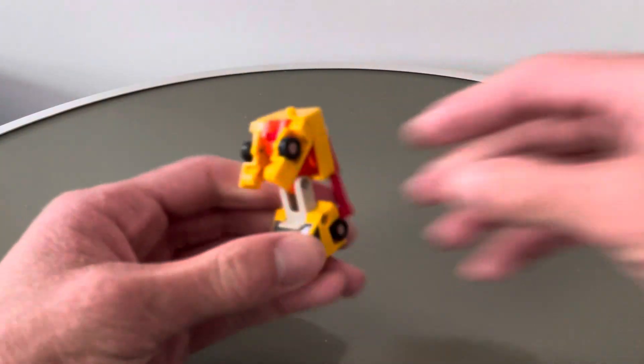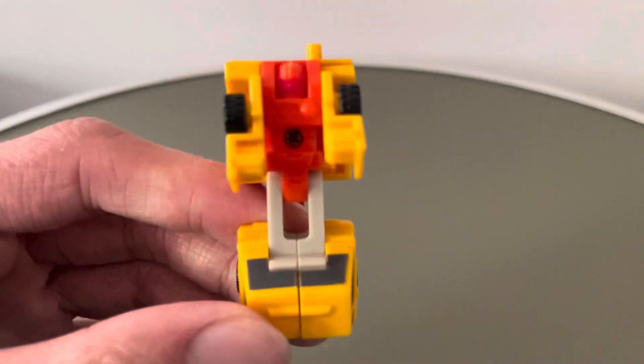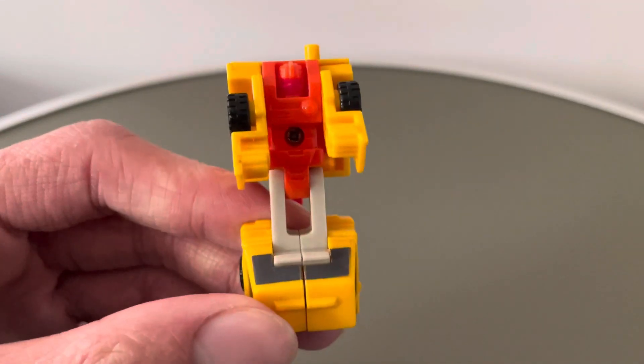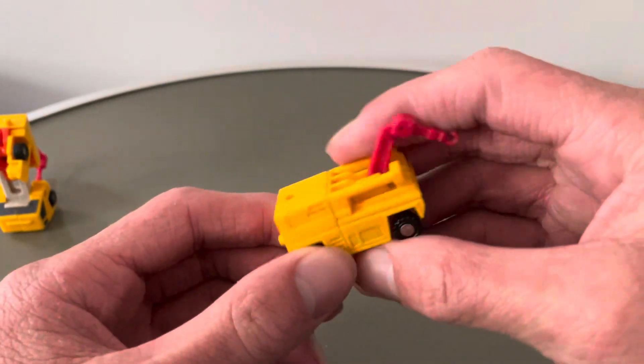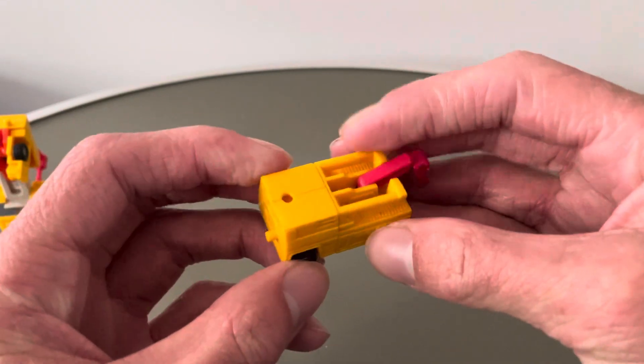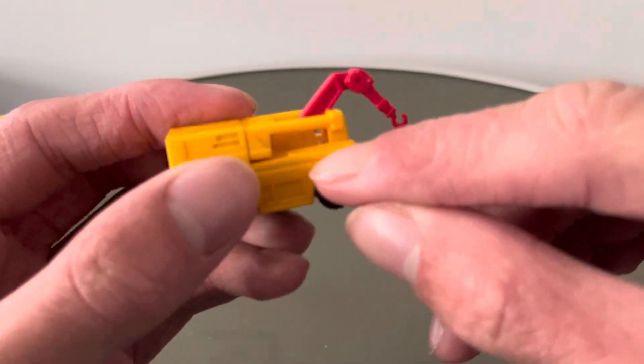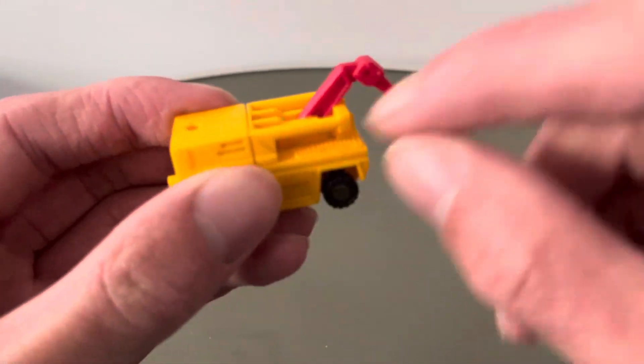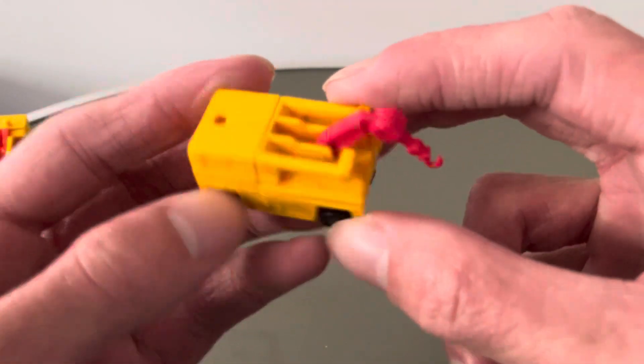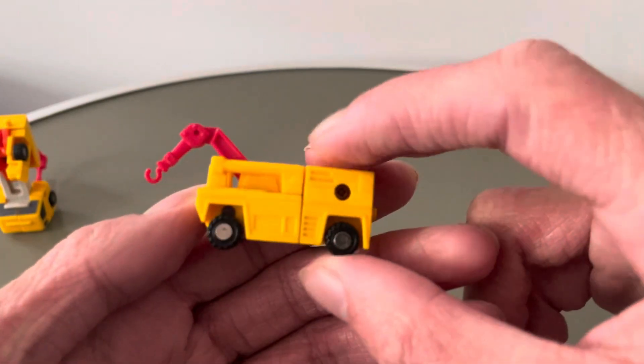And I quite like it. Pretty cool Micromaster. So that is Stone Cruncher, the first of the six. Good value if you ask me, getting six in a pack. This is Stone Cruncher, Excavator. I really like the detail in there, the ridges and stuff. Pretty cool. Nice detail on the crane as well.